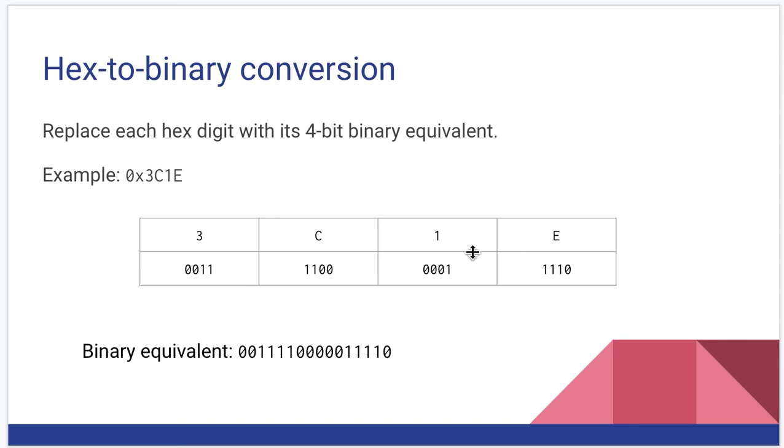So, again, another example, 3C1E. If we go to the chart on the previous page, E is 1110, 1 is 0001, C is 1100, 3 is 0011. The binary equivalent would just be all that stuff together right here.